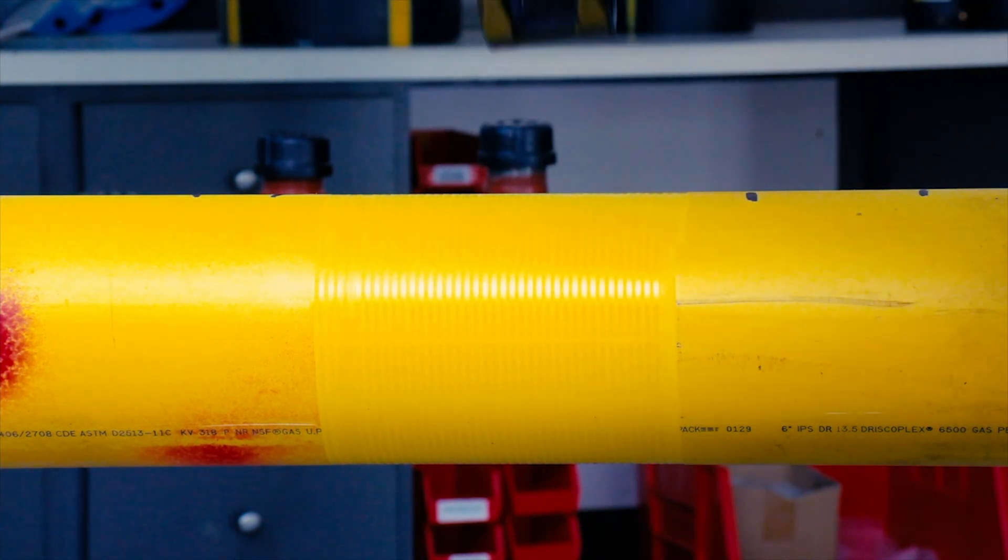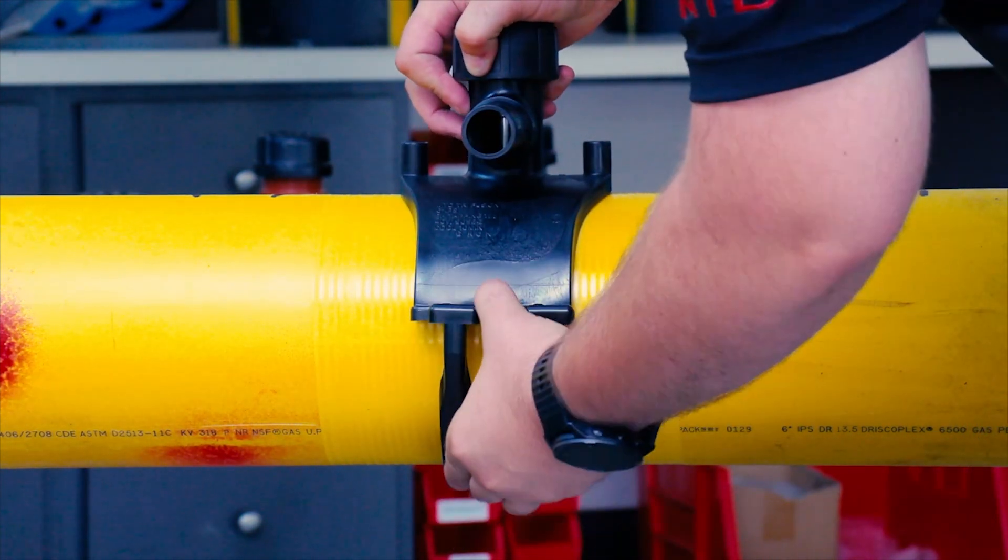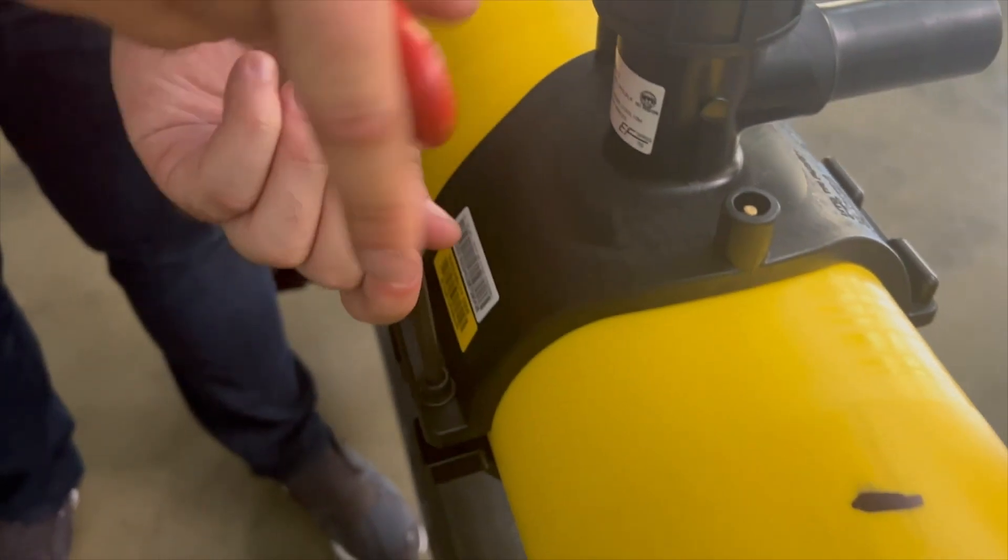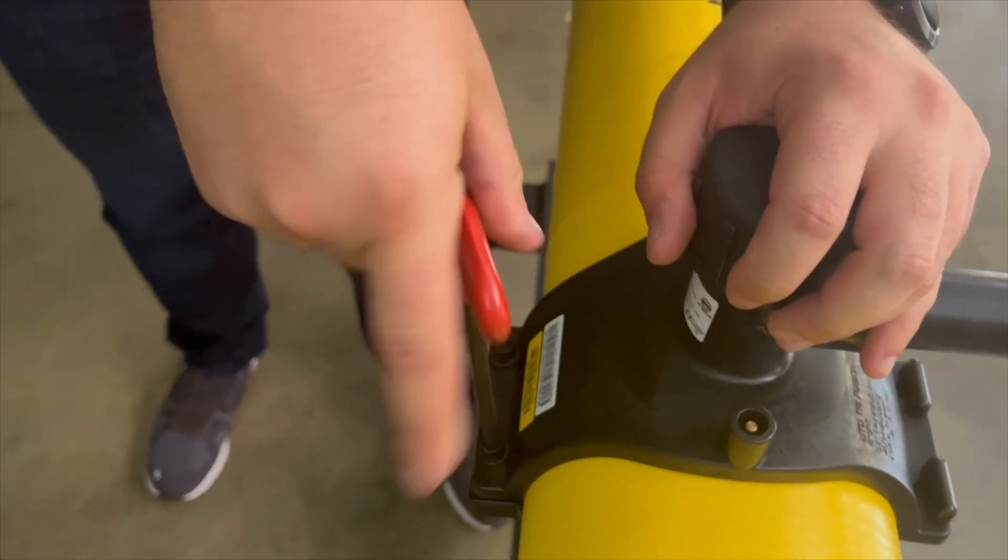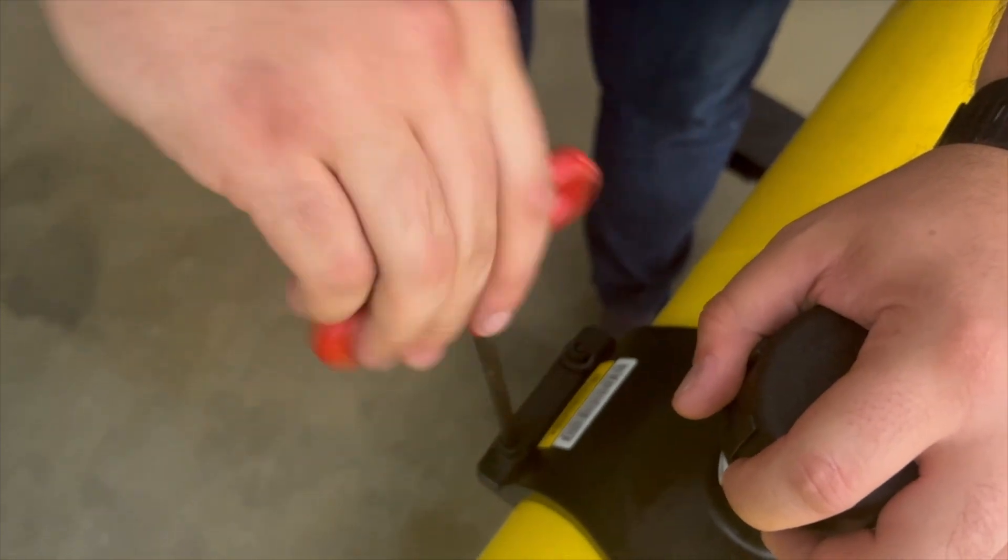Open the under clamp, place the tee on the main, then close the under clamp. Next, tighten the tee onto the pipe by turning the two screws clockwise. These screws should be evenly tightened but not bottomed out.